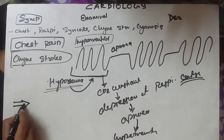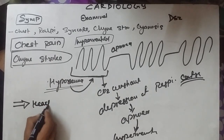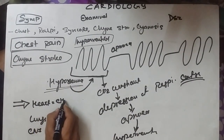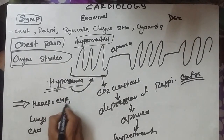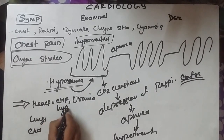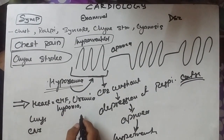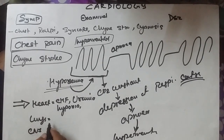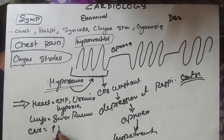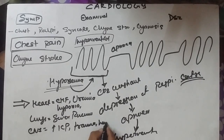The diseases which present with Cheyne-Stokes breathing are diseases of the heart, lungs, and CNS. Under heart: congestive heart failure or severe heart failure can cause Cheyne-Stokes breathing. Uremia syndrome can also cause chronic hypoxia. Under lungs: severe heart failure can contribute. Under CNS: increased intracranial pressure, trauma, excessive hemorrhage, or narcotic drug abuse can precipitate hypoxia, leading to Cheyne-Stokes breathing.